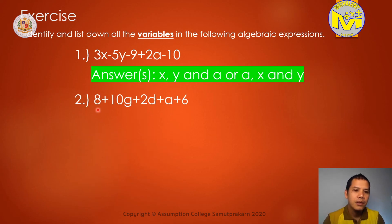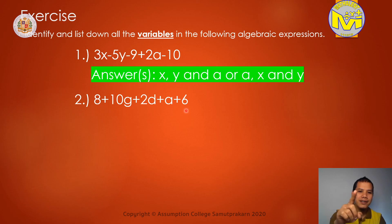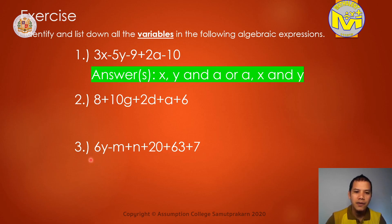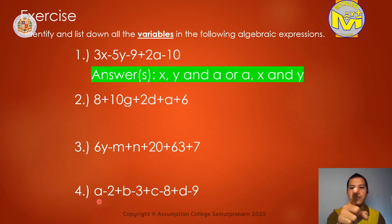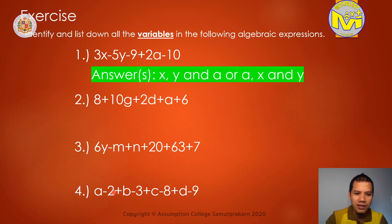Number 2: how many variables can you see or identify? We have 1 and 2 — yes, we got 2. And number 3: how many variables can you identify? We have 1, 2, 3 — 3 also. Number 4: we have 1, 2, 3, and 4 — yes, we have 4 variables in this expression.